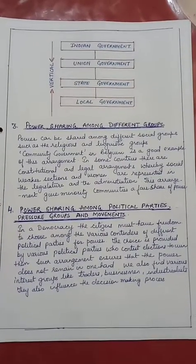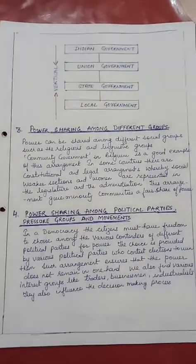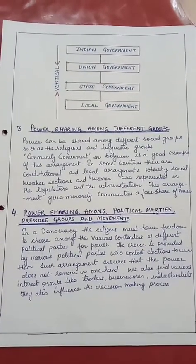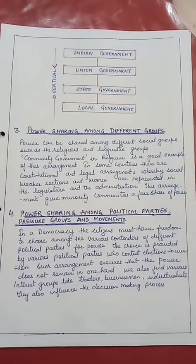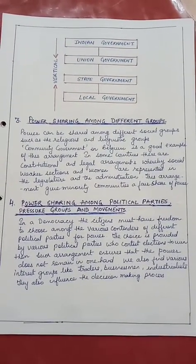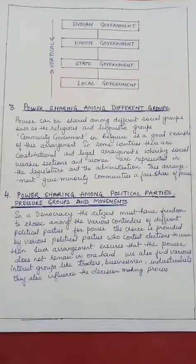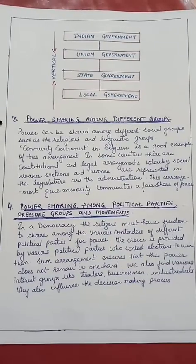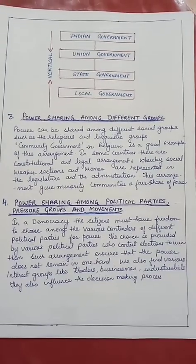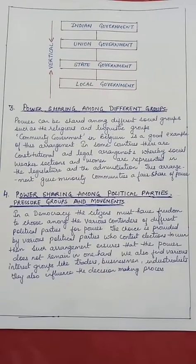Then we have the third form: power sharing among different social groups. Power can be shared among different social groups such as religious and linguistic groups. Community government in Belgium is a good example of this arrangement. In some countries, there are constitutional and legal arrangements whereby socially weaker sections and women are represented in the legislature and administration. This arrangement gives minority communities a fair share of power.